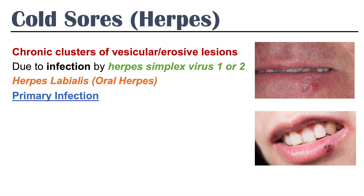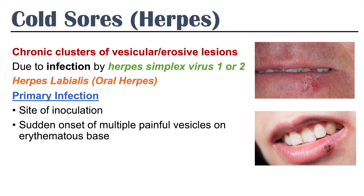The primary infection involving herpes simplex virus 1 or 2 has a site of inoculation. If someone comes into contact with someone else that is shedding the virus and there may be a break in the skin, that is the site of inoculation. There can be a sudden onset of multiple painful vesicles on an erythematous base — a very nasty, painful area on the lip or wherever the site of inoculation is. The primary infection generally lasts for about 10 to 14 days.